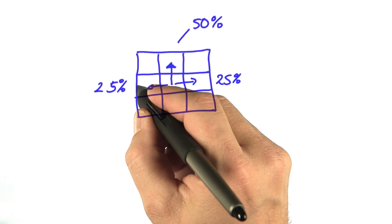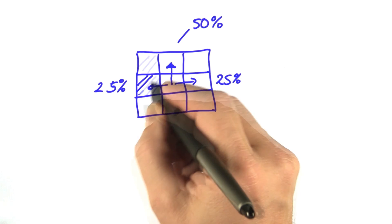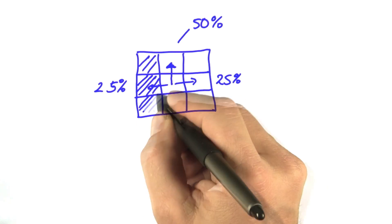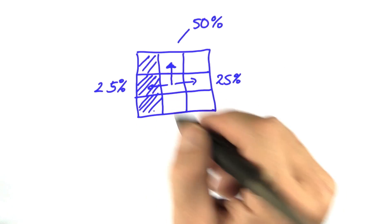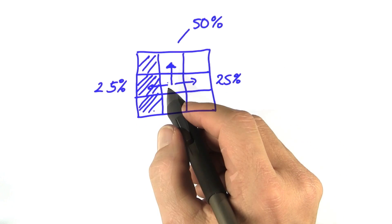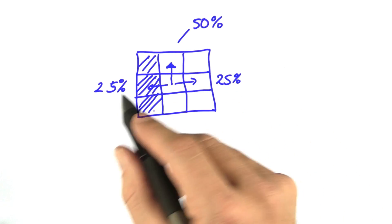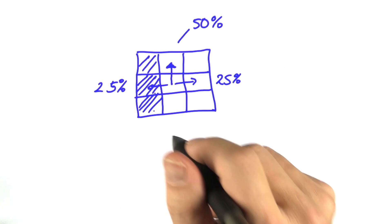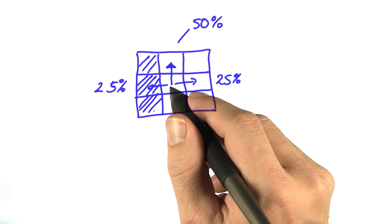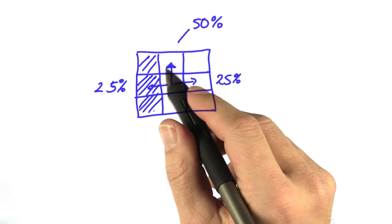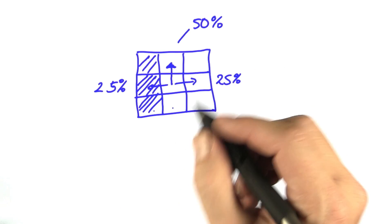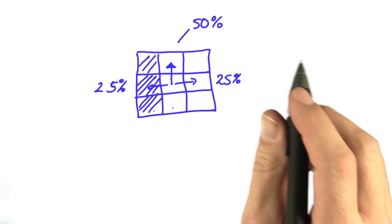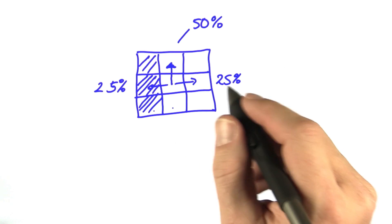If, for example, there was a wall over here and the robot decided to go up, then with 25% chance it would hit the wall, which is not good. So staying away from a wall is a good idea in a stochastic situation.